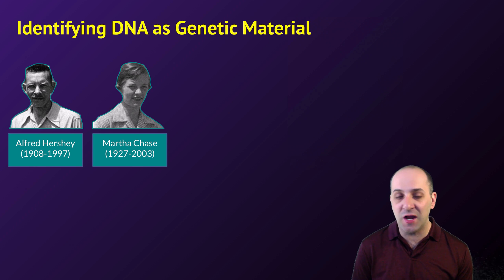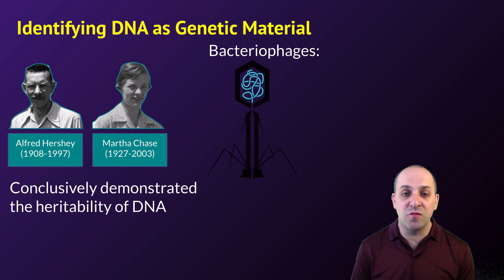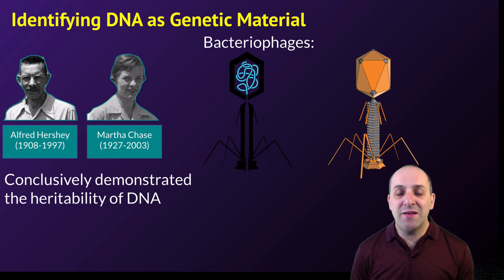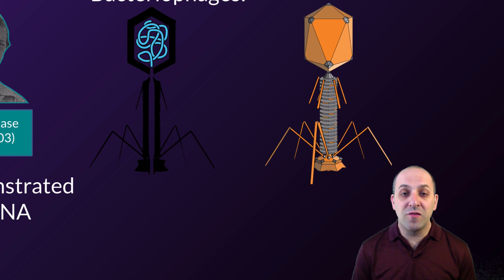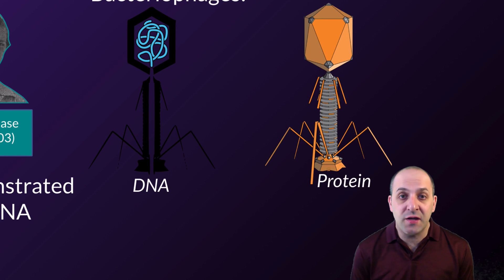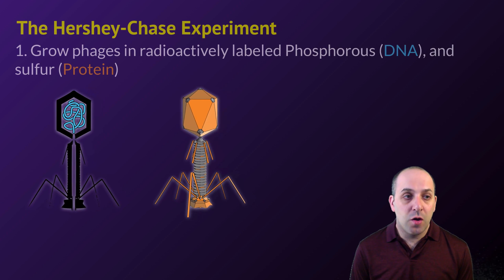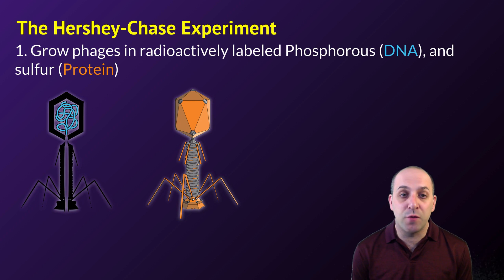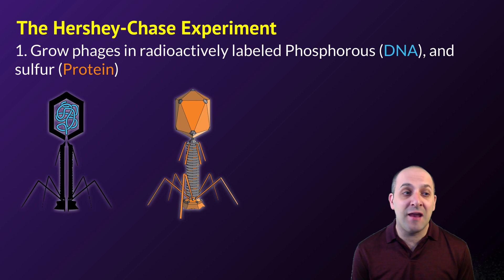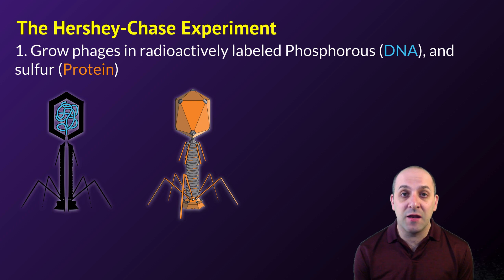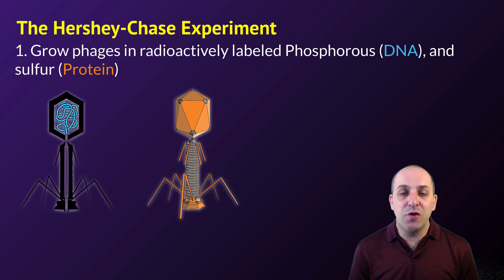The final experimental result that really established that DNA was the genetic material was carried out by Hershey and Chase. In their experiment, they used bacteriophages, which are viruses that infect bacteria. Bacteriophages have two main components: a DNA molecule surrounded by a protein coat. Hershey and Chase grew two different populations of bacteriophages in radioactively labeled elements — radioactively labeled phosphorus and radioactively labeled sulfur — to radioactively tag the DNA and the protein. DNA has phosphorus but no sulfur; protein contains sulfur but no phosphorus. By growing phages in these two different media, they were able to label the two different molecules and track their behavior during the phage life cycle.